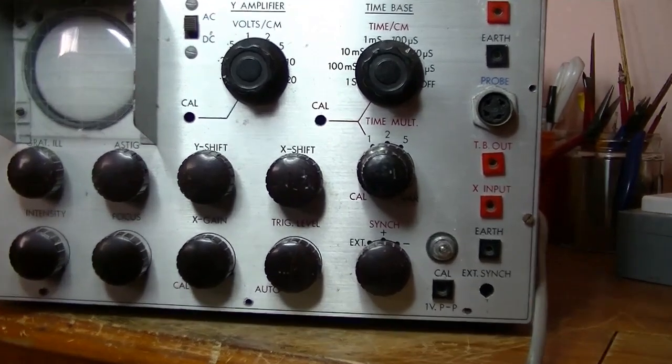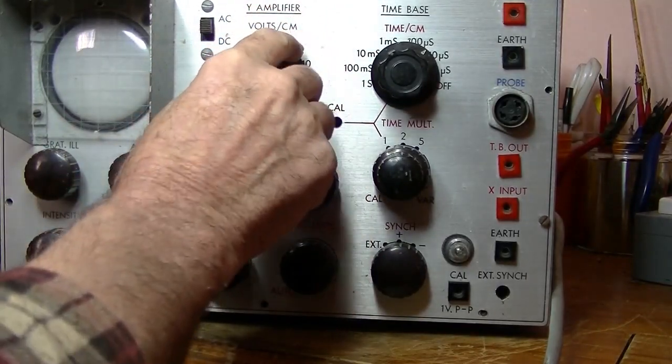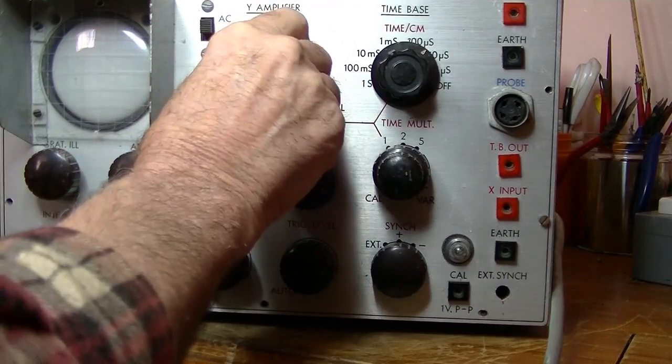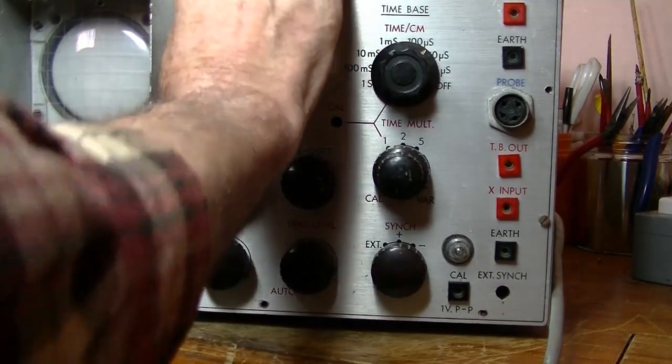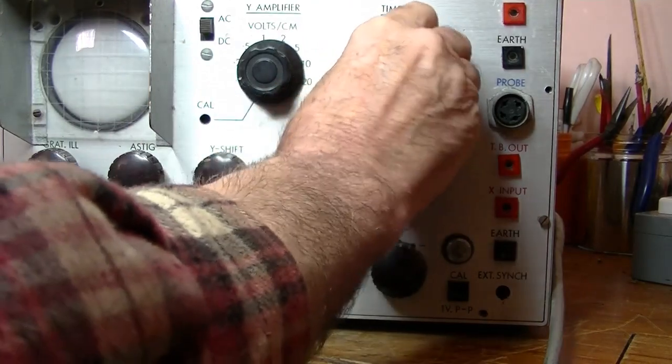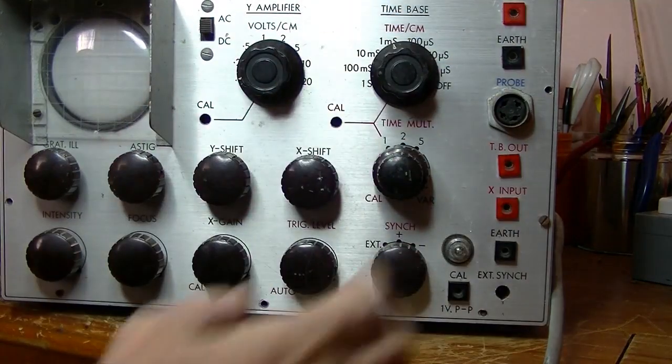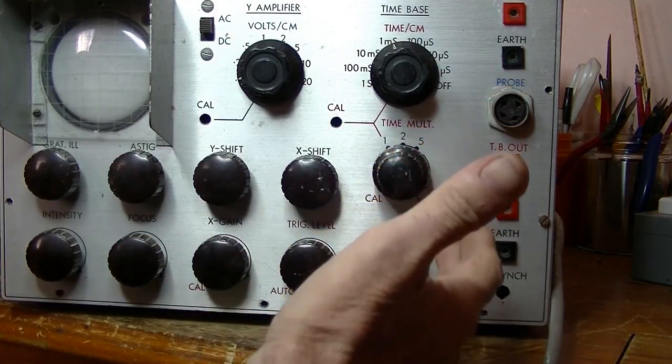But let's have a look and see what we've got. Just coming a little bit more. So, start at the top, Y amplifier. Volts per centimeter, an AC-DC switch. Time base, 10 milliseconds, 1 millisecond, 100 milliseconds. This is the time multiplier, I'm taking it.